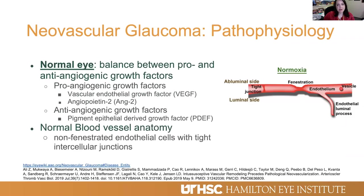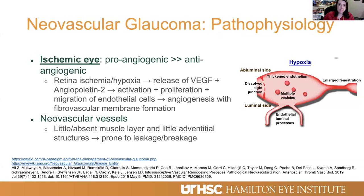What is the pathophysiology of neovascular glaucoma? Before we get into that, let's review the physiology and anatomy of a normal eye. In the normal healthy eye, there is a balance between pro- and anti-angiogenic growth factors, with pro-angiogenic growth factors being VEGF and angiopoietin-2, and the anti-angiogenic growth factor being pigment epithelial-derived growth factor, or PEDF. In a normal healthy vessel, capillaries contain non-fenestrated endothelial cells with tight intercellular junctions, with normal oxygenation or normoxia.